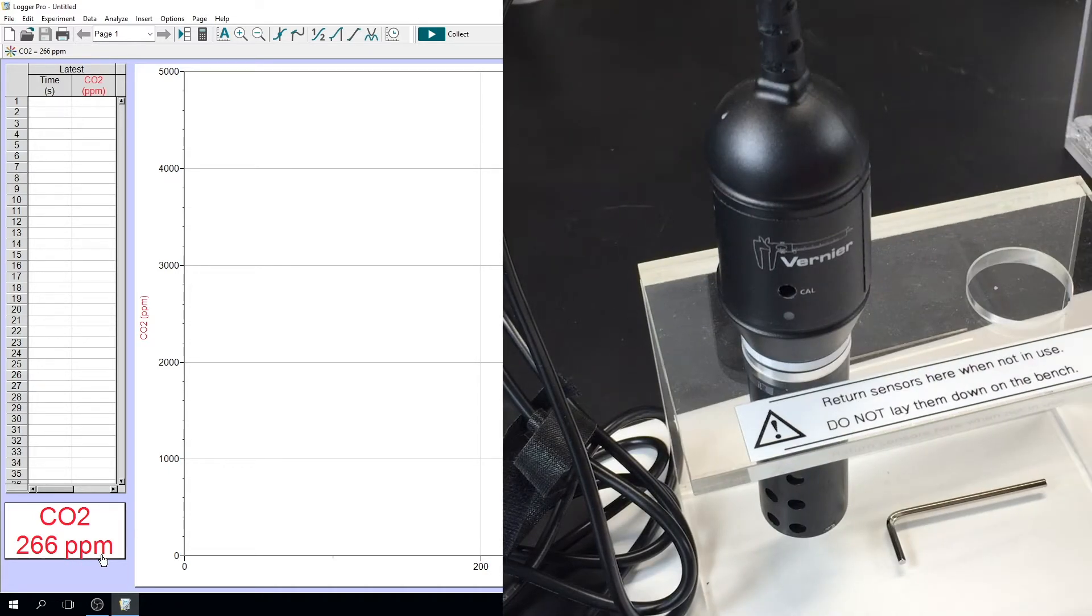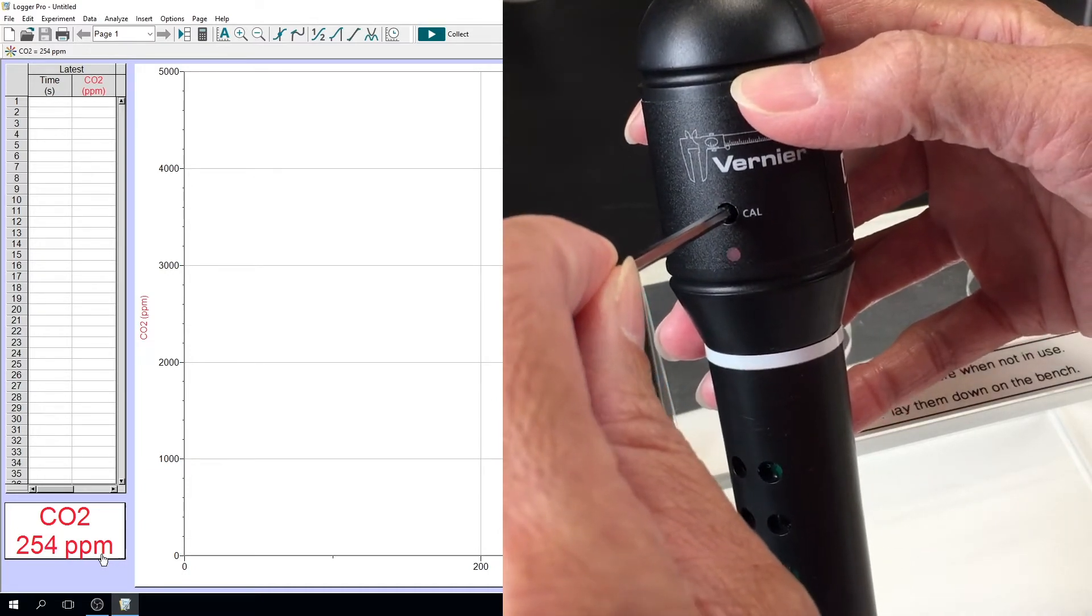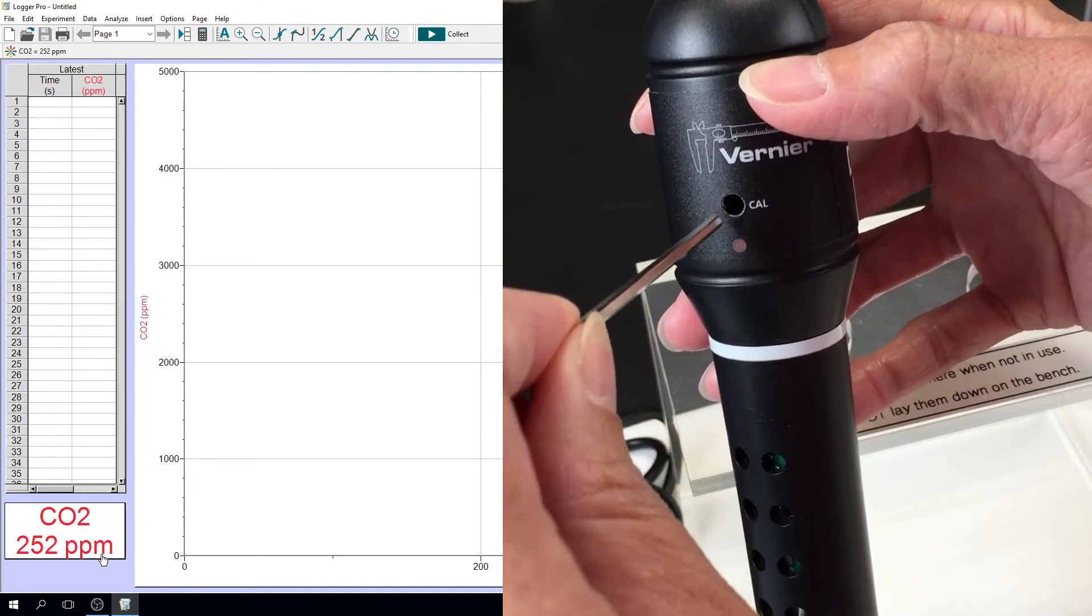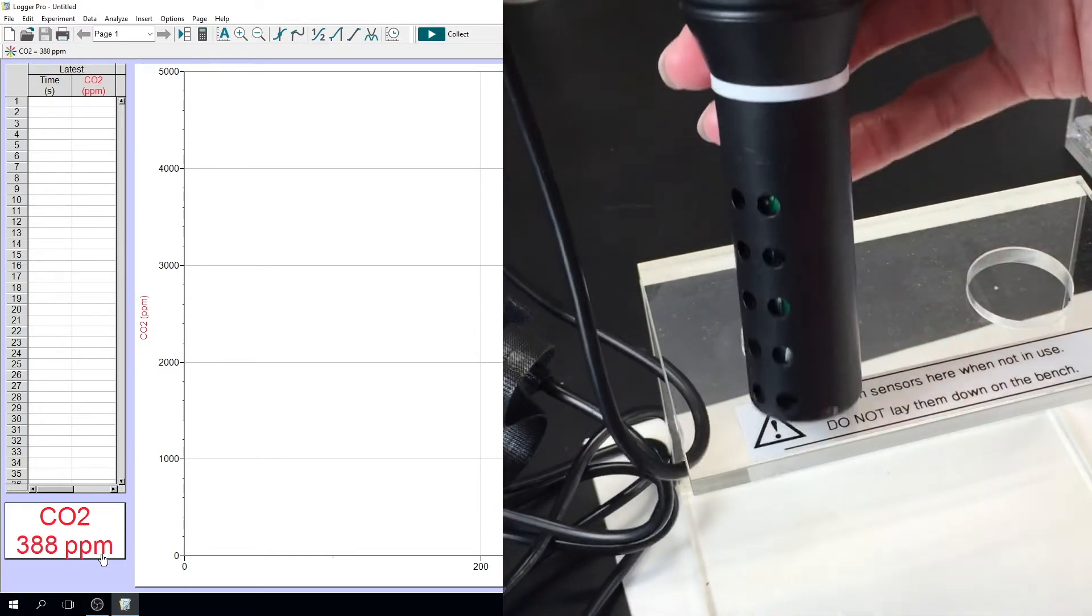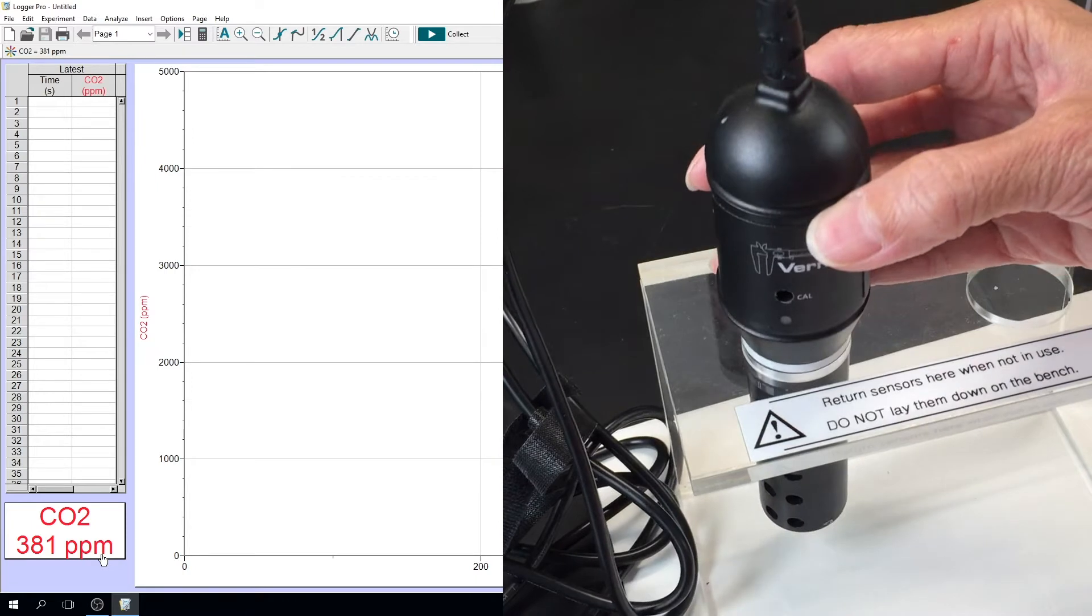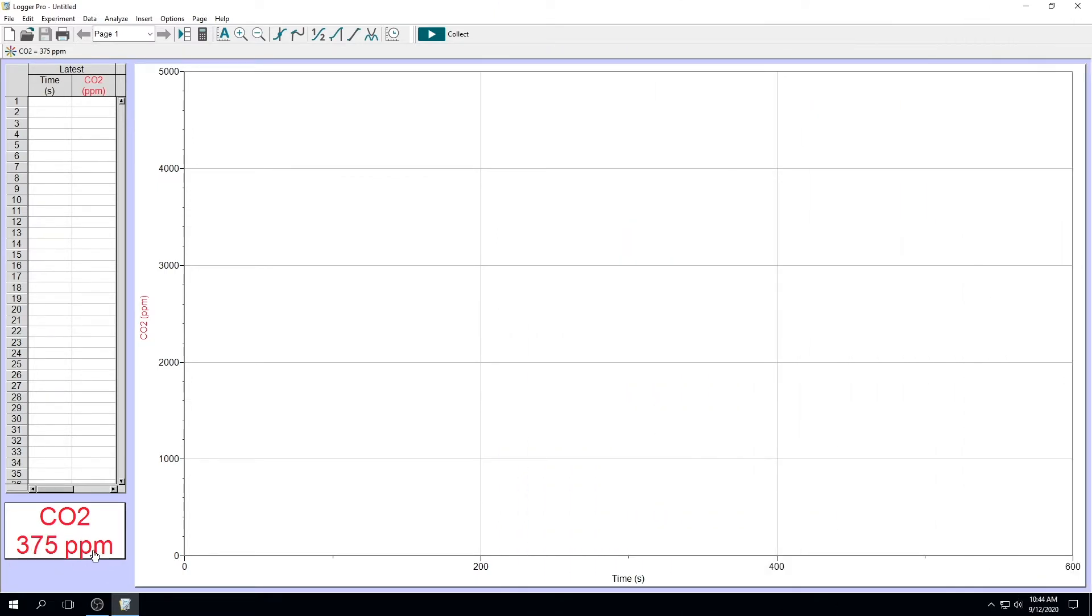Take the Allen key provided and press it into the Cal button on the side of your carbon dioxide sensor. You should see a red light begin to flash, at which point release it immediately. And you'll see your carbon dioxide sensor reading is now within range of 350 to 450 parts per million. If you press the Cal button too long and the red light stays lit, you'll have to redo your calibration.